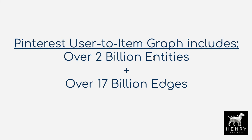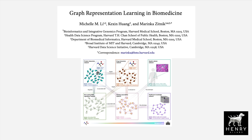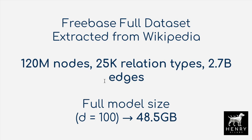The Pinterest user-to-item graph is an example of a bipartite recommendation system graph, with 2 billion users and 17 billion edges of relations between users and items. Biological network graphs can also get really massive. The Freebase full dataset extracted from Wikipedia has 120 million nodes, 25,000 relation types, and 2.7 billion edges. Just forming vectors in a word-to-vector sense with 100 dimensions per node yields about 50 gigabytes of vector data for the entire node set.